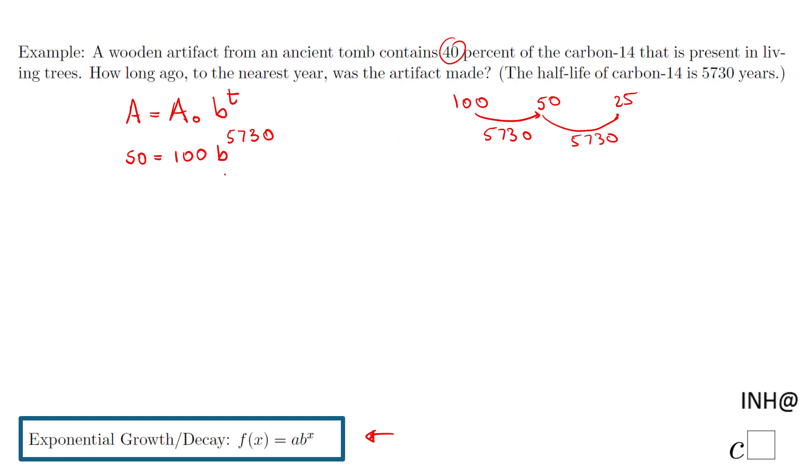Now I need to solve for this b. For that reason, I'm going to divide by 100, and I'm going to have 0.5, which makes sense - half of the original quantity - equals b to the power of 5730.